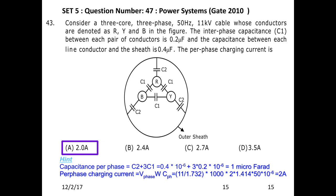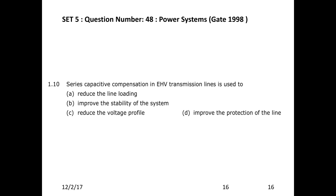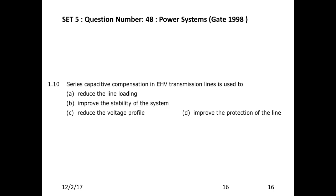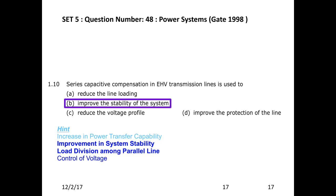Next question: Series capacitive compensation in EHV transmission lines is used to improve the stability of the system. The purposes of series capacitive compensation are: to increase the power transfer capability, improvement in system stability, load division among parallel lines, and control of voltage — avoiding sudden voltage collapse. The answer is choice B: improve the stability of the system.